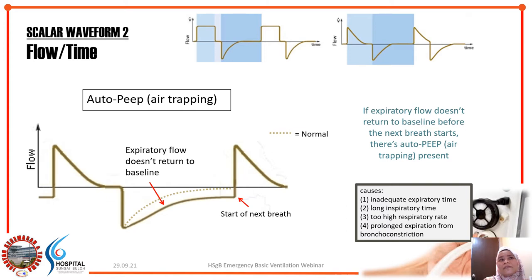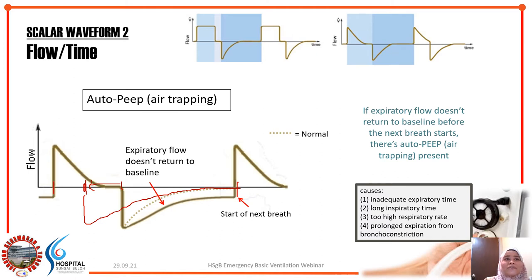What causes auto-PEEP? There are four causes: inadequate E time, too long an I time, high respiratory rate, or bronchospasm. To troubleshoot, you can shorten the I time and lengthen the E time. With the same respiratory rate, the patient will have more time to reach baseline before the next breath starts, thereby reducing air trapping.